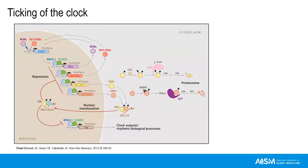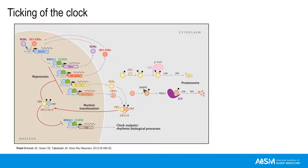The self-sustained oscillation — the ticking of the clock — is based on a transcriptional-translational negative feedback loop. BMAL and CLOCK proteins form heterodimers in the nucleus and bind to the E-BOX promoter of PER and CRY. BMAL and CLOCK promote the transcription of PER and CRY, which are translated, form heterodimers in the cytoplasm, translocate back into the nucleus, and inhibit their own transcription. This cycle takes about 24.2 hours. Post-translational modifications and ancillary loops such as ROR-alpha and REV-ERB fine-tune this feedback loop.